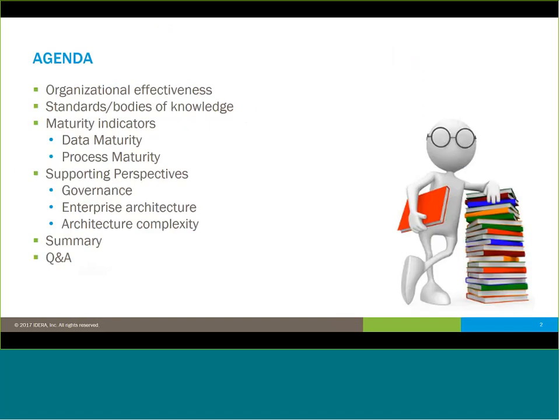Some of the things we'll be covering today: first I'll talk very briefly about organizational effectiveness and a little bit of my background. Then we'll merge into some of the standards and bodies of knowledge that come into play that you're probably using, one or more of these as a reference, either directly or indirectly in your organization. Then we'll talk about indicators of maturity — both from a data maturity perspective and a process maturity perspective. And then we'll expand that out and look at some supporting perspectives on governance, enterprise architecture, or the complexity of the architectures we have in our organizations to really enable them to move forward.